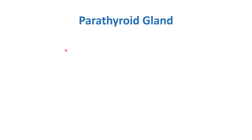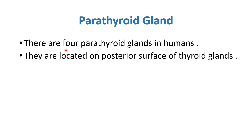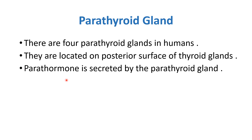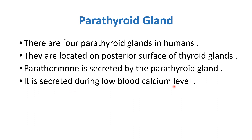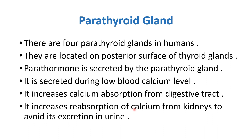Now we will discuss the parathyroid gland. There are four parathyroid glands in humans, located on the posterior surface of the thyroid gland. Parathyroid hormone is secreted during low blood calcium levels. The response is to raise blood calcium by increasing calcium absorption in the digestive tract and increasing calcium reabsorption in the kidney tubules to avoid its excretion in urine.